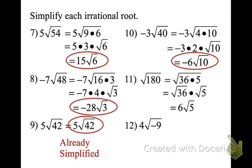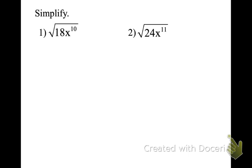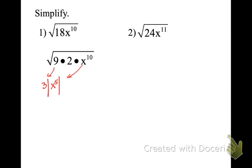Now we are adding variables. We're going to break this up into numbers and variables. So for √(18x¹⁰): let's do √18 times √(x¹⁰). 18 breaks into 9 times 2, and x to the 10th is a perfect square. The root of 9 is 3 — I can pull out a 3. I can pull out an x to the 5th out of x to the 10th. Since that's an odd result all alone, we handle it accordingly, and I'm left with √2 under the radical.